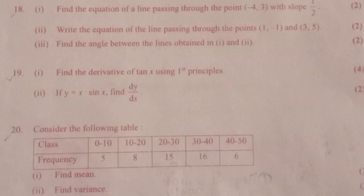3. Slope of line 1: m₁ = 1/2. Slope of line 2: m₂ = (5+1)/(3−1) = 6/2 = 3. tan θ = |(m₂ − m₁)/(1 + m₁m₂)| = |(3 − 1/2)/(1 + 3/2)| = |5/2 ÷ 5/2| = 1. Therefore θ = tan⁻¹(1) = π/4 = 45°. The obtuse angle is 180° − 45° = 135°.